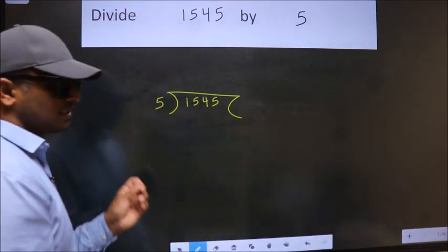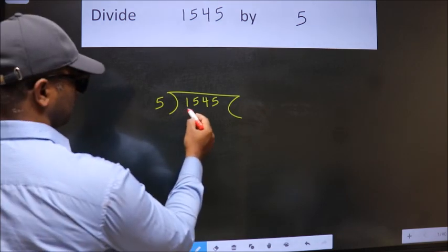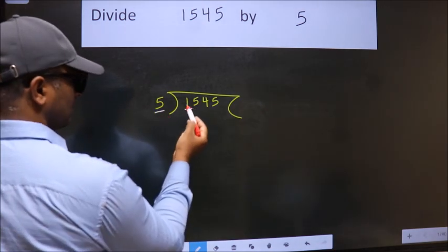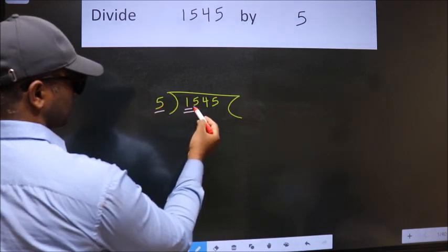This is your step 1. Next. Here we have 1, here 5. 1 is smaller than 5, so we should take two numbers: 15.